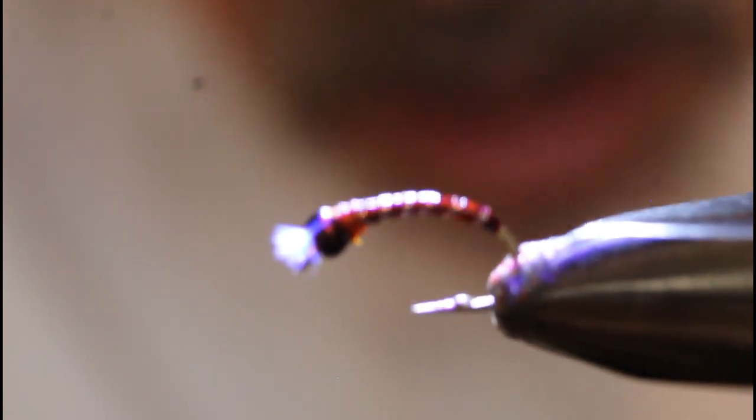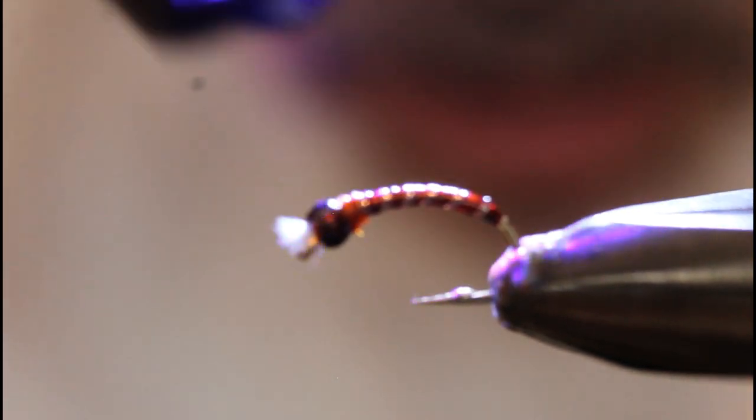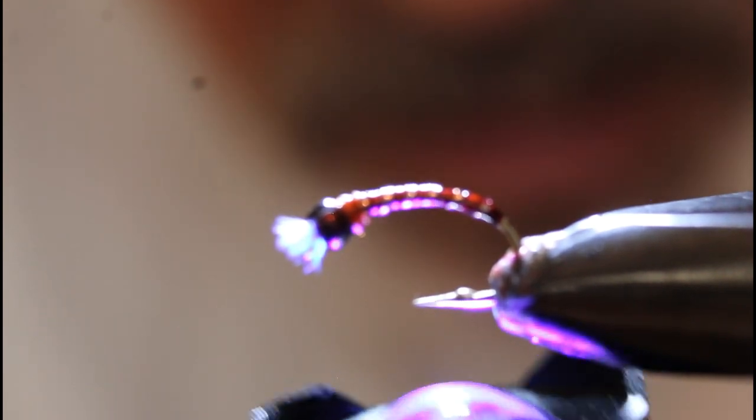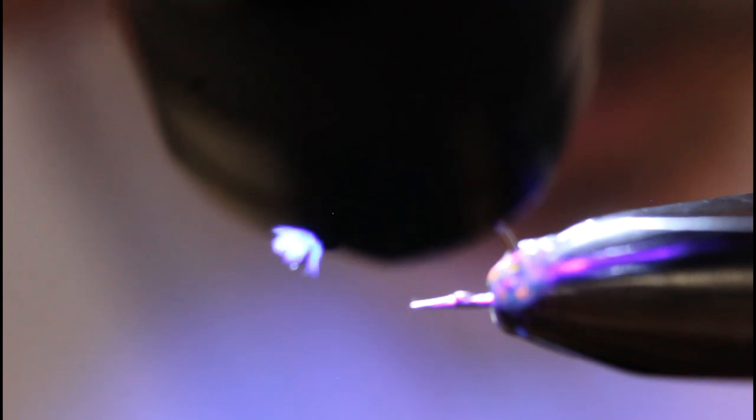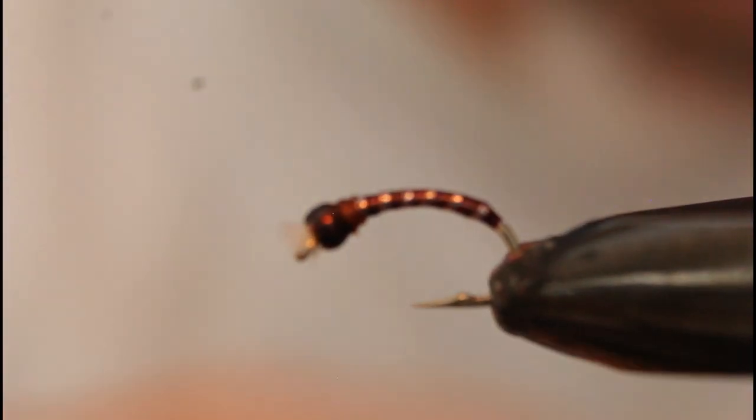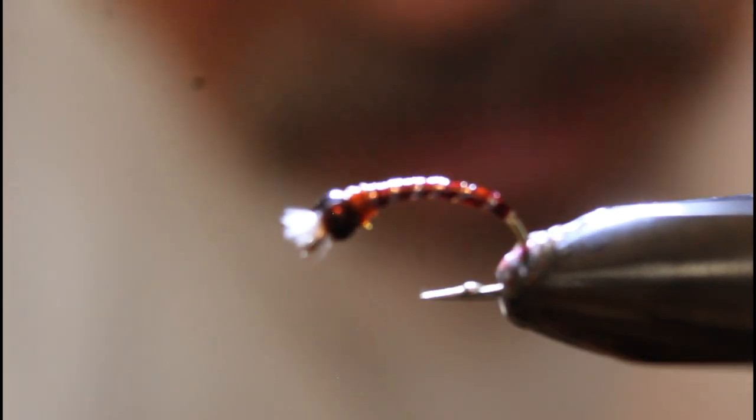Dandy fly - great looking chromie to be fished under an indicator or hung suspended on a sinking line, dangled under the boat. Great fly. I'm just going to give it a second coat just to smooth it out a little bit, just a half a drop more.